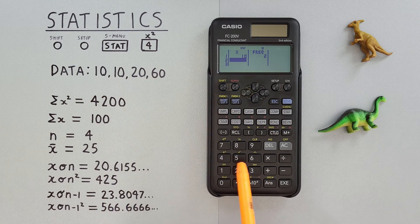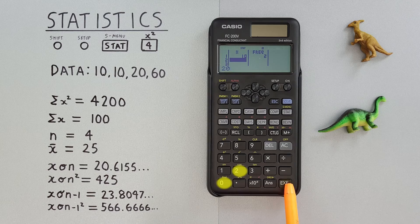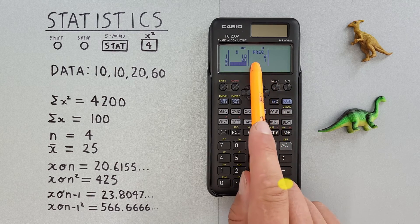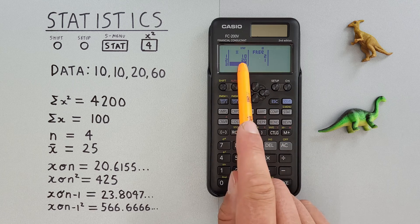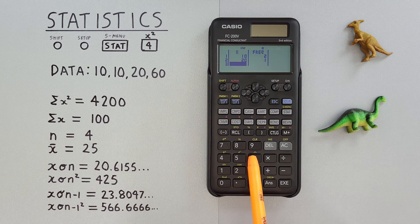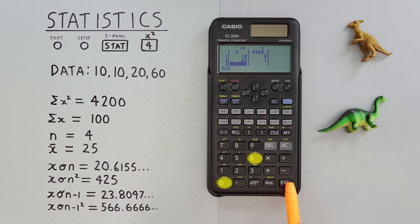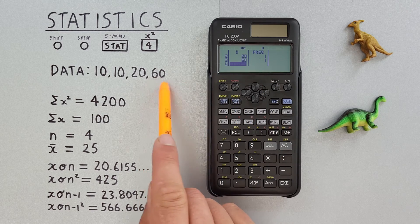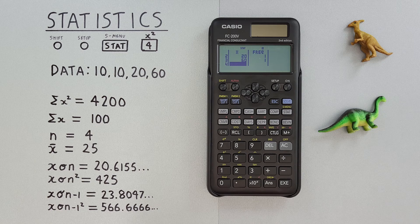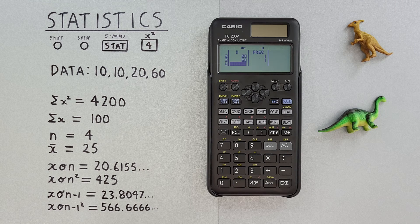Next, we have 20. So we put our 20 in, hit EXE. And we see it defaults to one. And that's okay here, because we only have one 20. And then 60. And again, our 60 defaults to one. And that's okay, because we only have one 60.